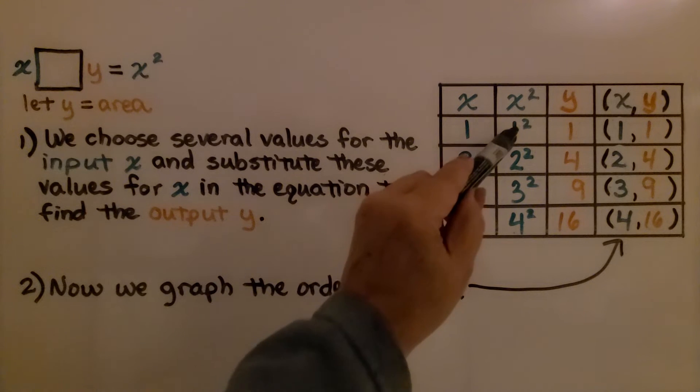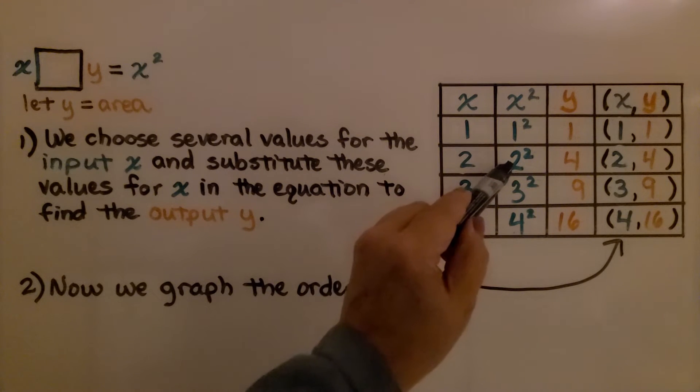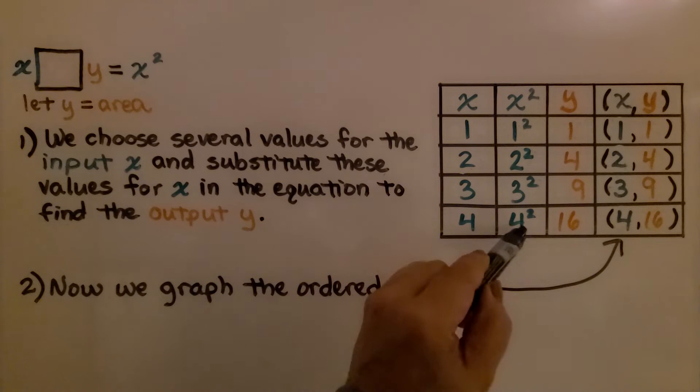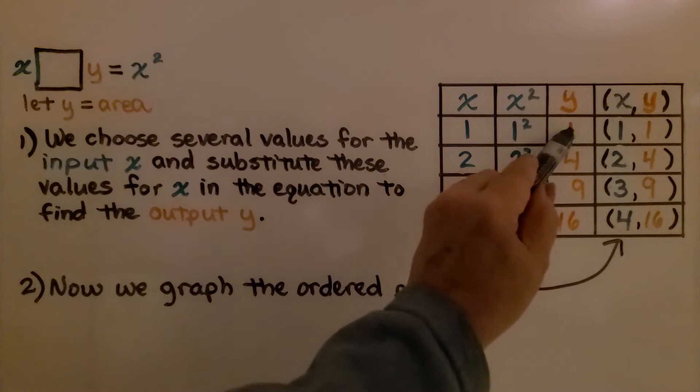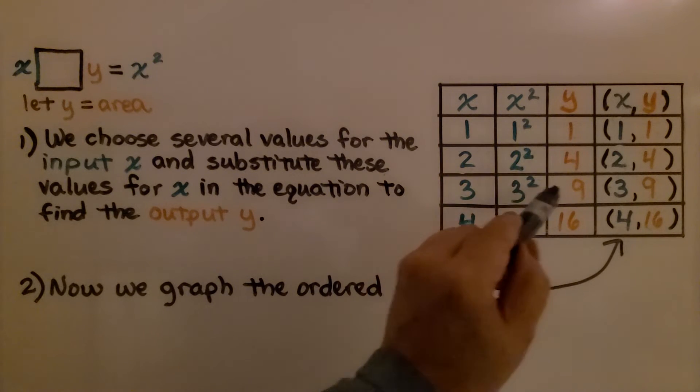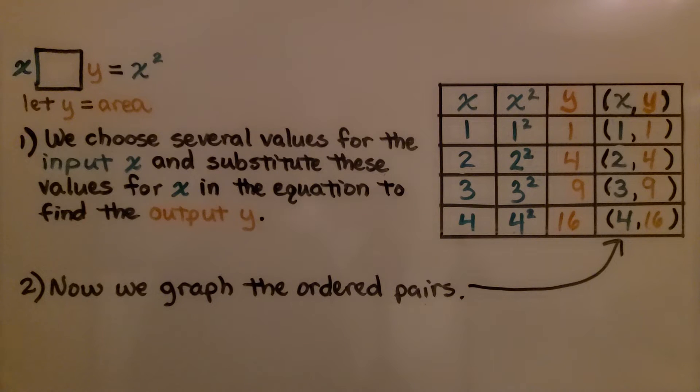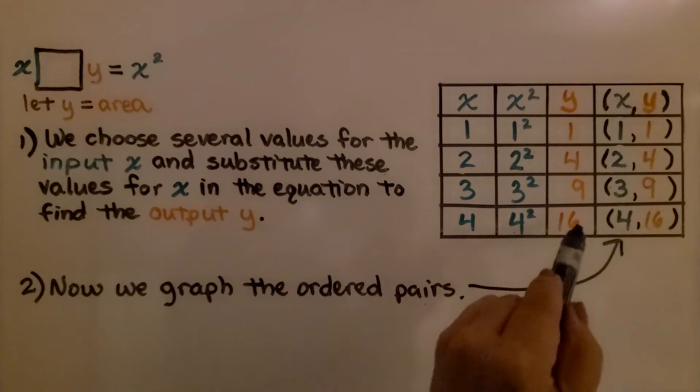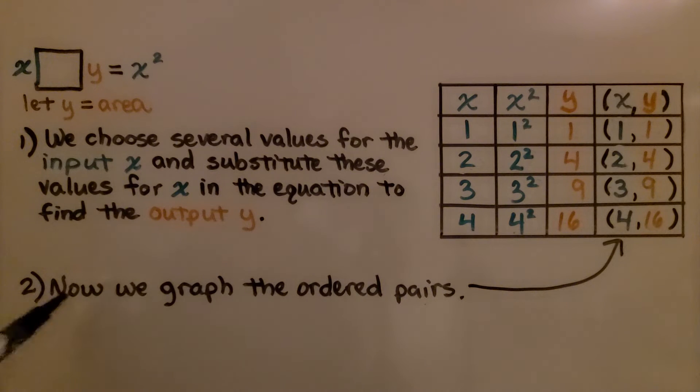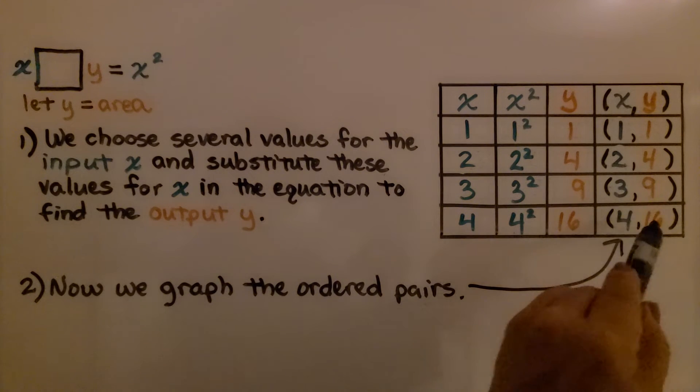For x squared, we have 1 squared. For 2, we have 2 squared, we have 3 squared, and 4 squared. That means the y is going to equal 1 because 1 times 1 is 1, 2 times 2 is 4, 3 times 3 is 9, and 4 times 4 is 16. Now we have our xy values, our ordered pairs, and now we graph these ordered pairs.